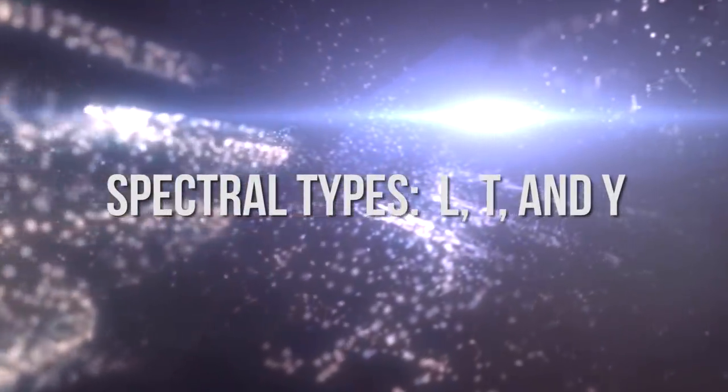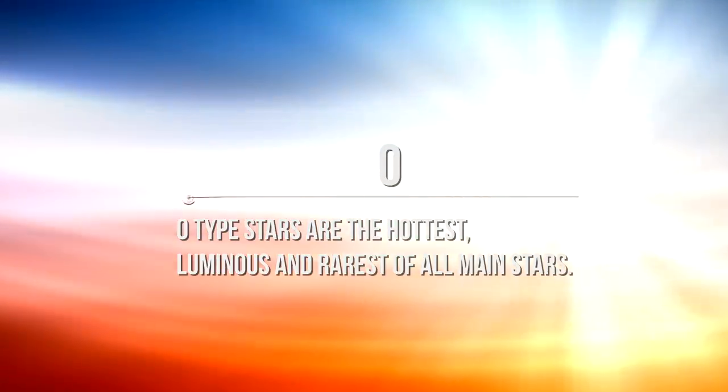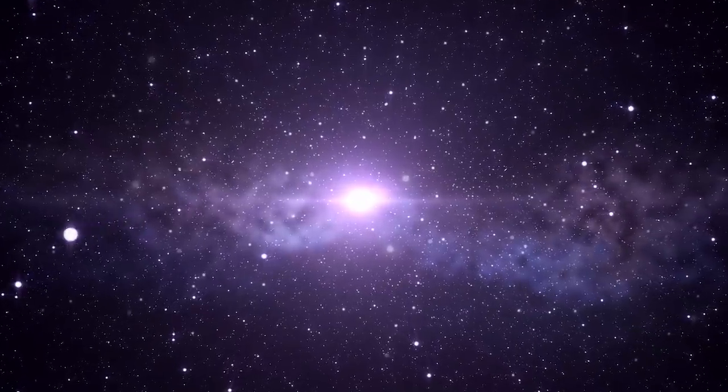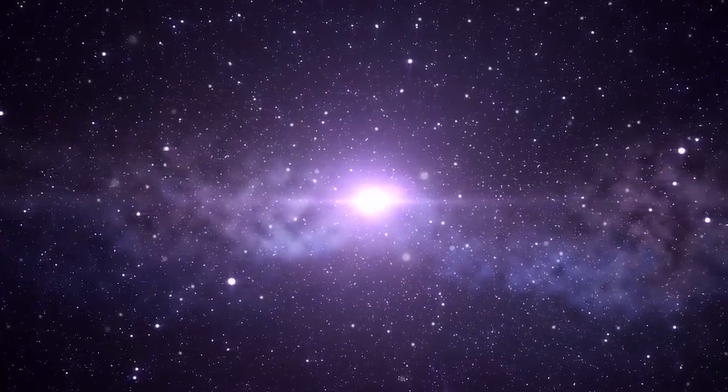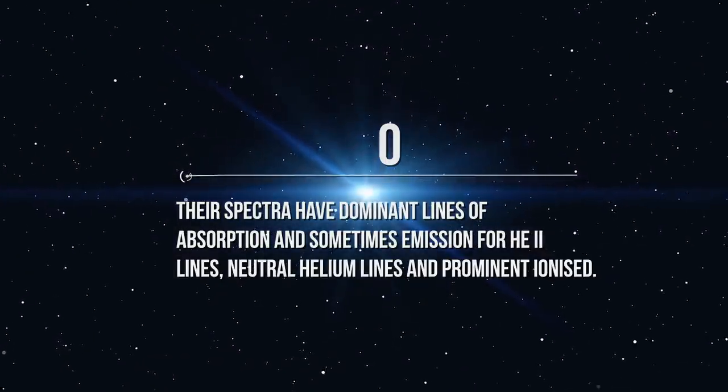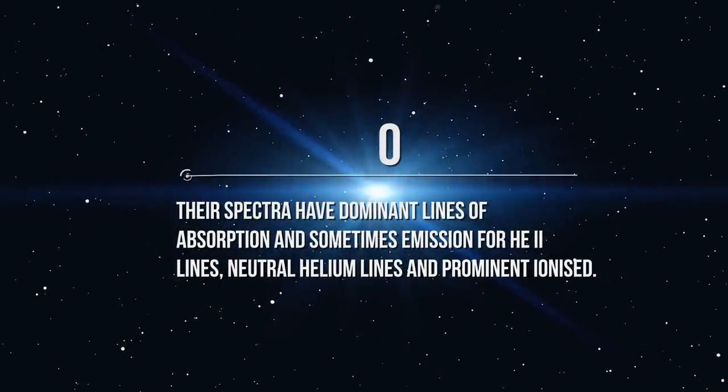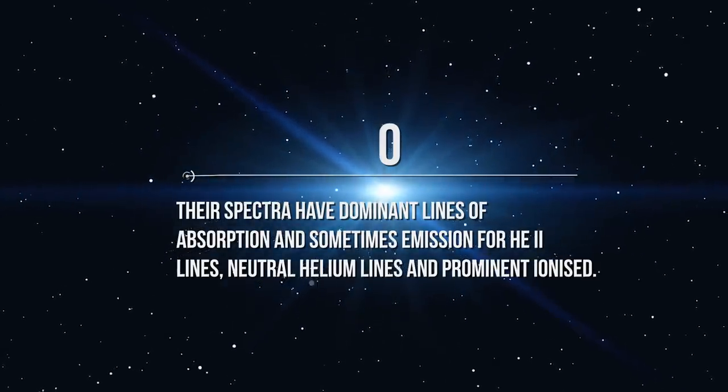Now, let's get to know about the classification in detail. Starting with the letter O, O-type stars are the hottest, luminous, and rarest of all main stars. They have very complicated surroundings, which makes the measurement of their spectra difficult. Most of the massive stars lie within this particular type. Because of their massive and giant size, they have very hot cores and burn through their hydrogen fuel very quickly. So they tend to burn brighter and are the first stars to leave the main sequence. Their spectra have dominant lines of absorption and sometimes emission for HE2 lines, neutral helium lines, and prominent ionized.